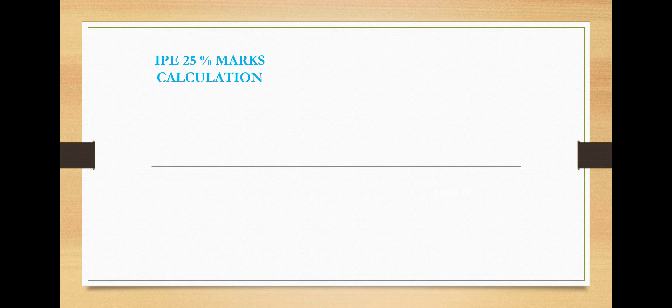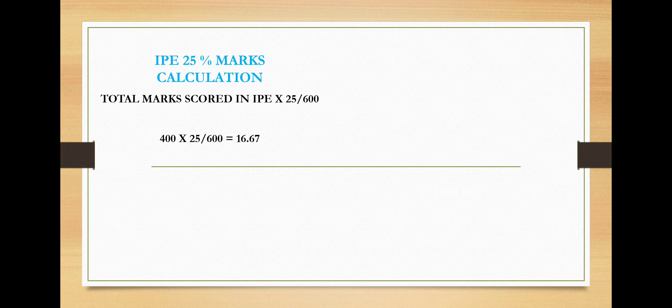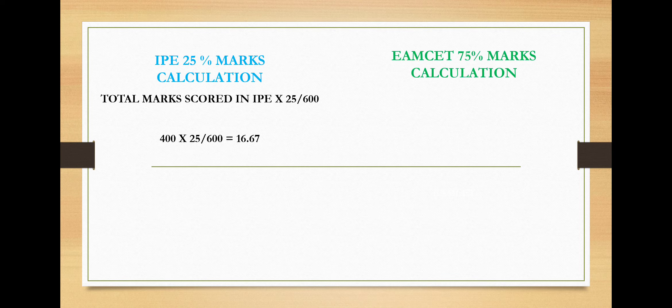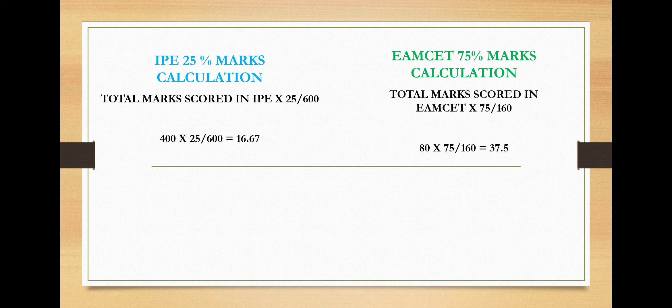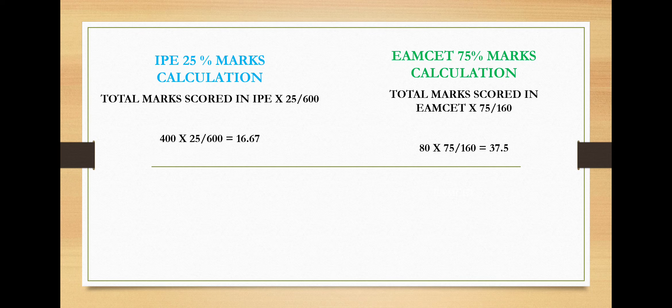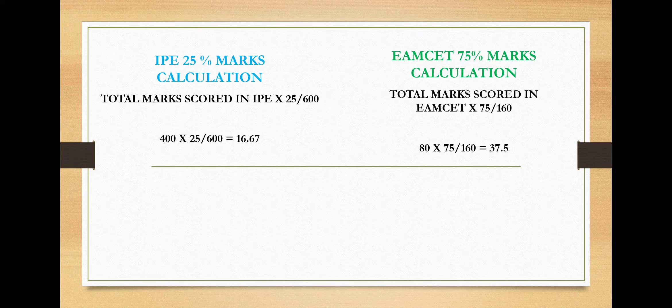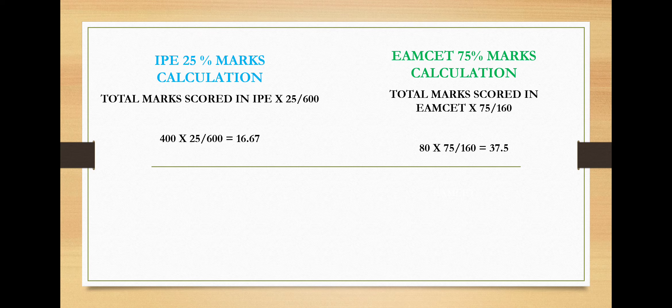Let us see how we can calculate 25% marks of IPE. Suppose a student secured 400 marks in IPE, that should be multiplied with 25 and divided by 600. This gives 16.67. Let us see EAMCET 75% marks calculation. Total marks scored in EAMCET, that is multiplied with 75 and divided by 160. So 80 into 75 divided by 160 is 37.5.